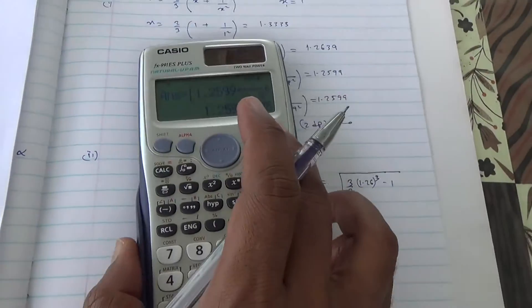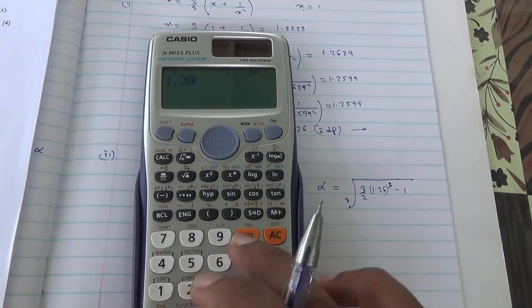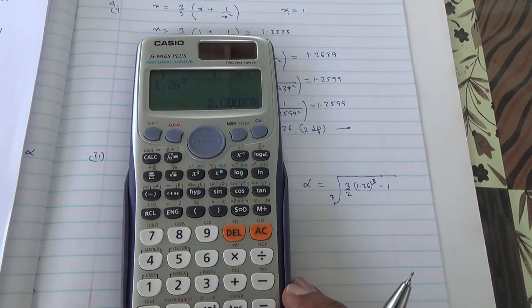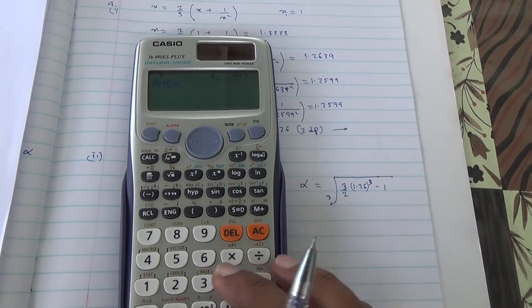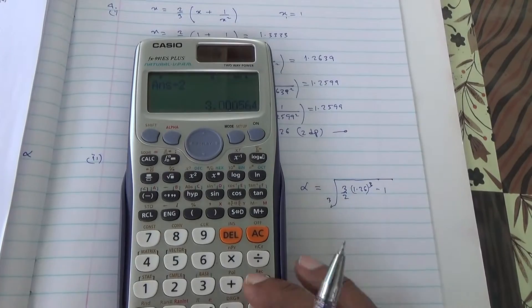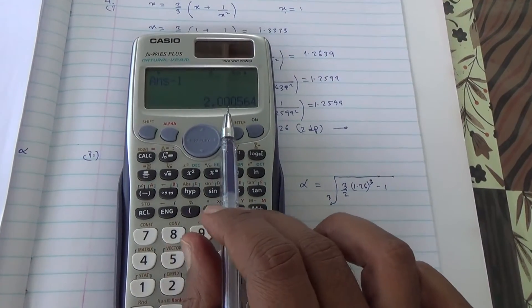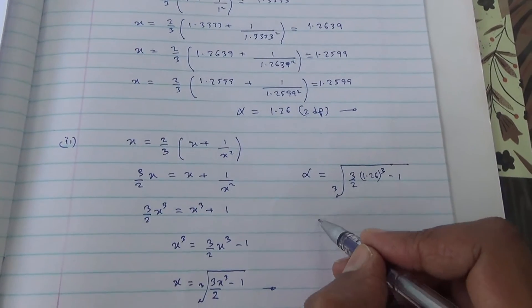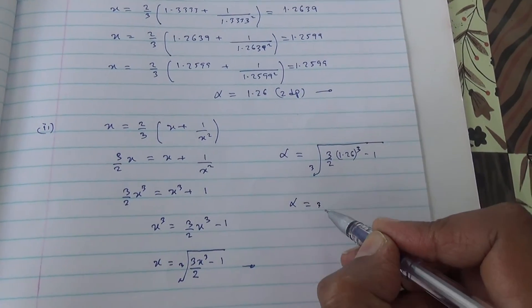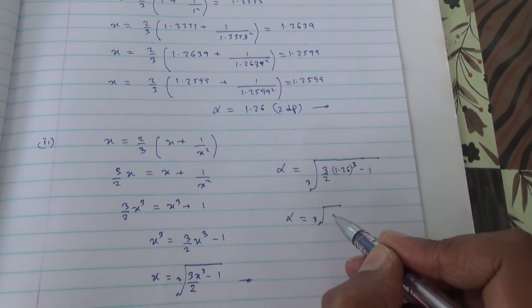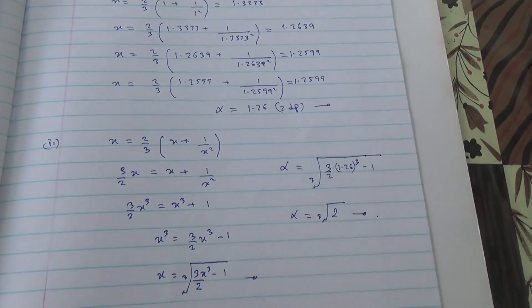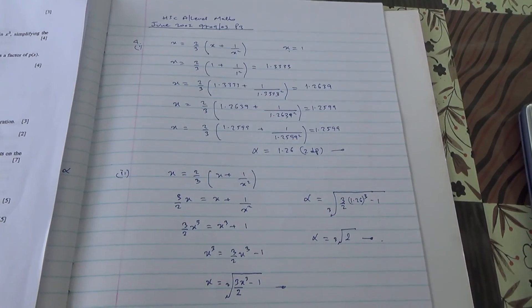Let's do that on the calculator. So 1.26 to the cube, times 3 divided by 2 and then minus 1. You're going to get 2.000564. So we have it then that the exact value of alpha is going to be the cube root of 2. Here we are for this question. All right.